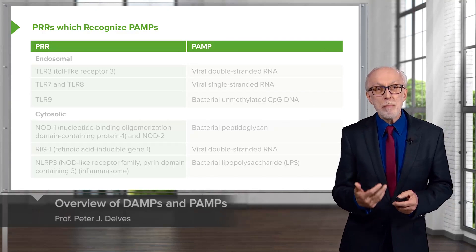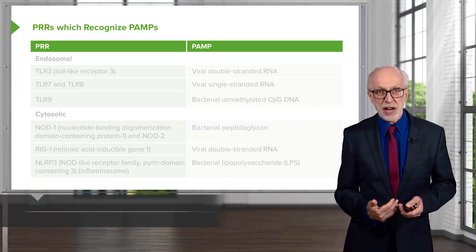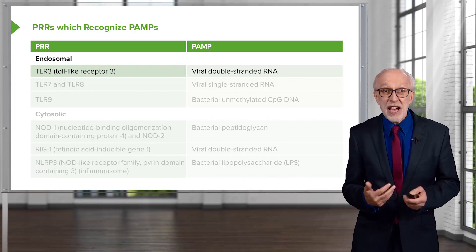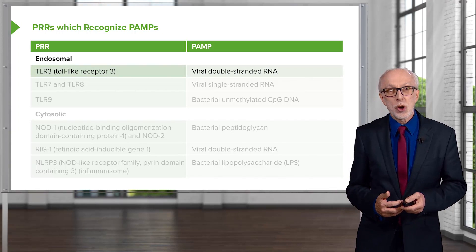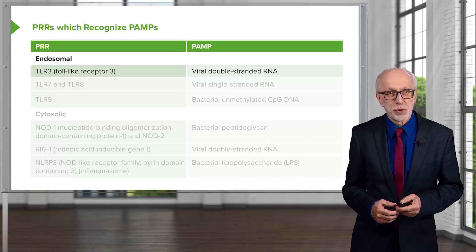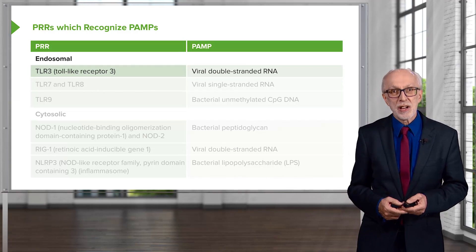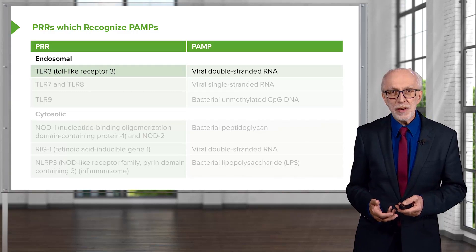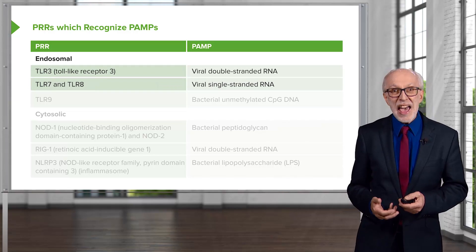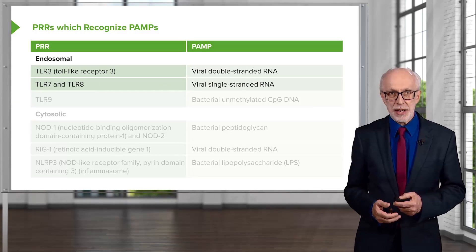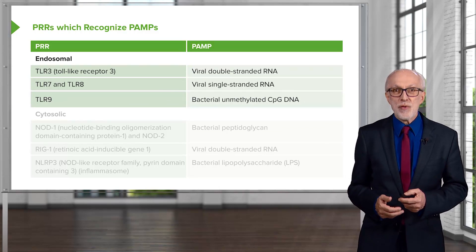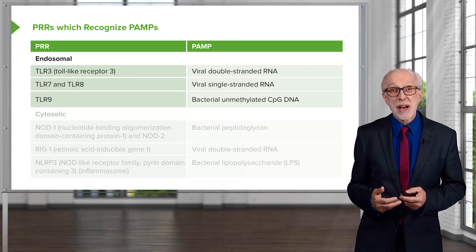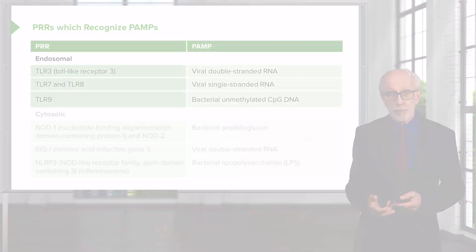Let's look at endosomal pattern recognition receptors. There is a group of around 10 pattern recognition receptors called toll-like receptors. TLR3 recognizes the PAMP viral double-stranded RNA. TLR7 and TLR8 recognize viral single-stranded RNA. TLR9 recognizes a particular nucleotide sequence within bacterial DNA called bacterial unmethylated CpG.